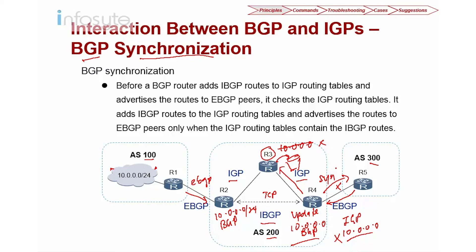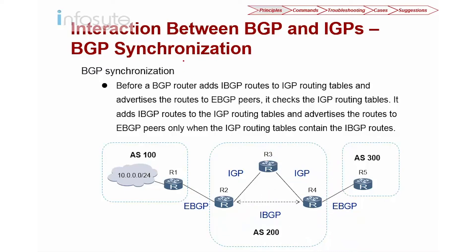Be aware that in Huawei, the synchronization rule is disabled by default. In other words, with Huawei routers you need a full mesh topology where all routers run BGP. In a large network, this may not scale well because of the full mesh requirement.